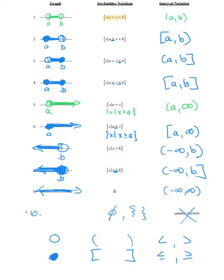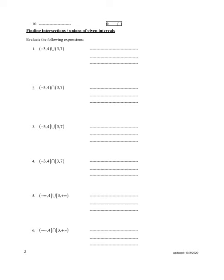Now let's look at finding the intersection or the union. We have to be able to tell the difference between whether we're dealing with intersection or union. If you see the union symbol (∪), you need to recognize that this is the union of two sets — that is OR. Typically we see two different pieces of the solution set in this instance.